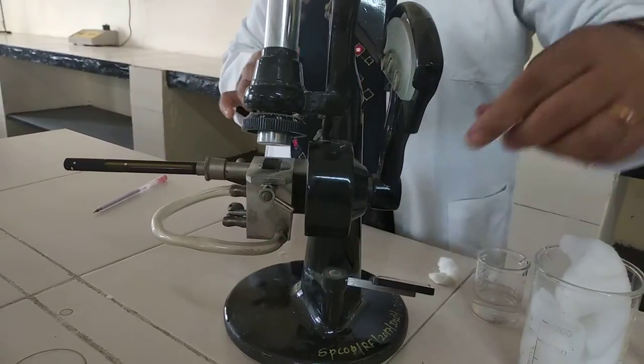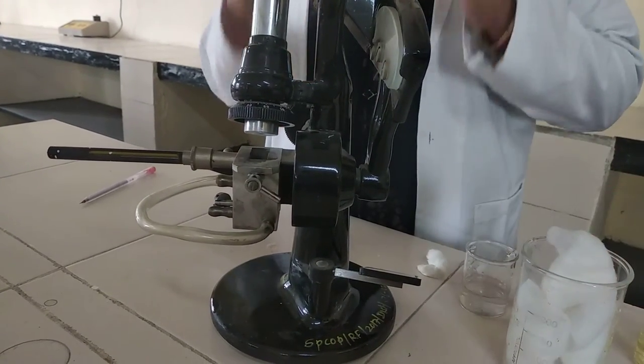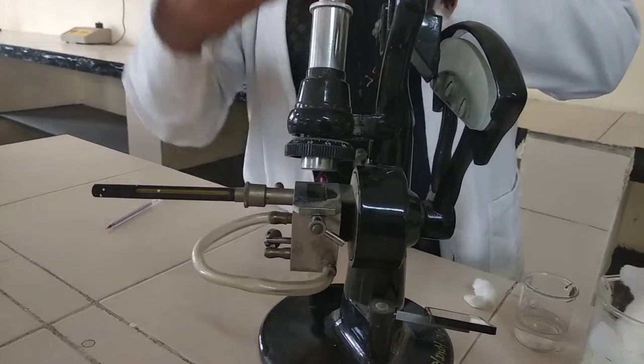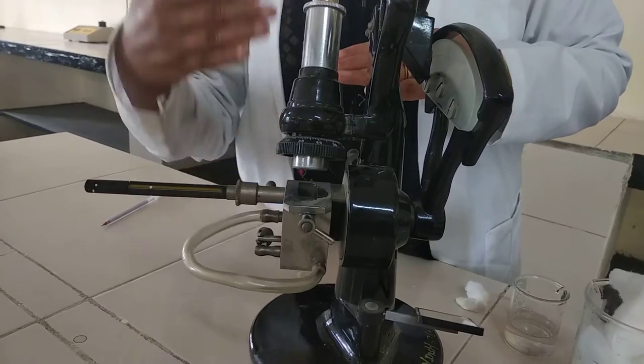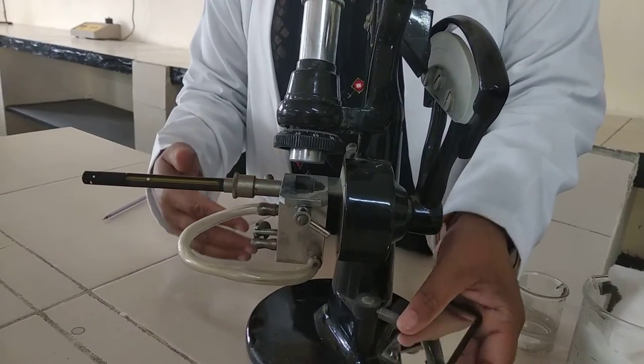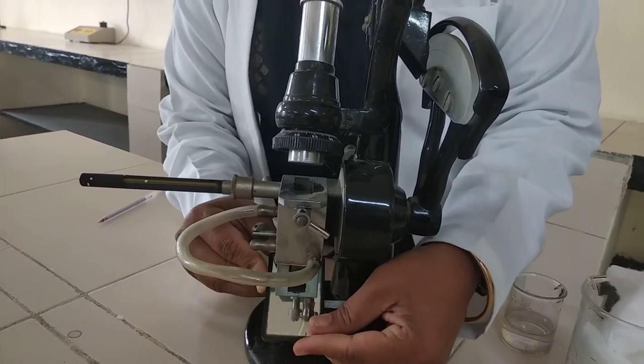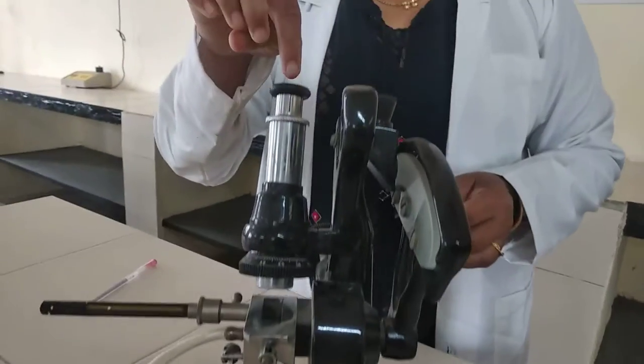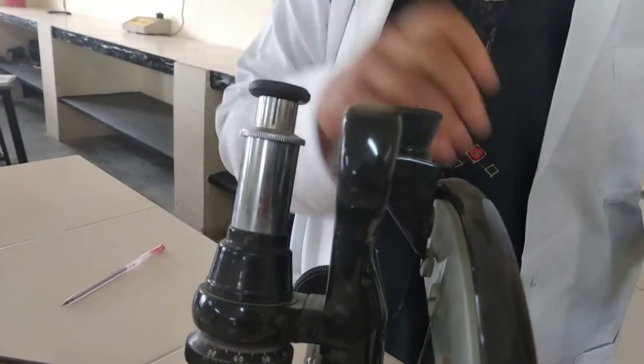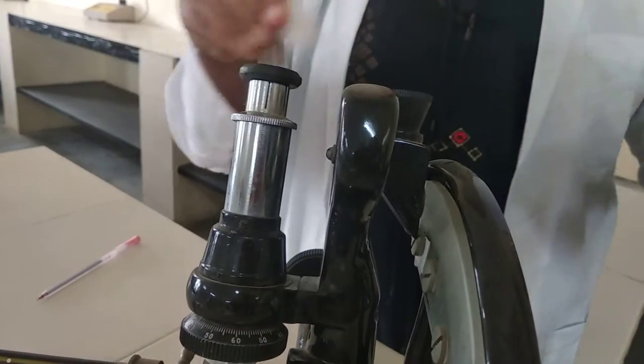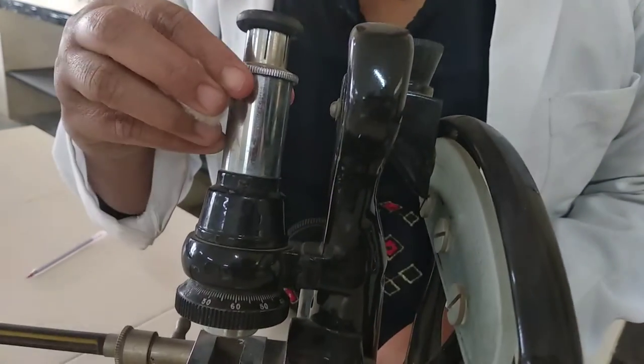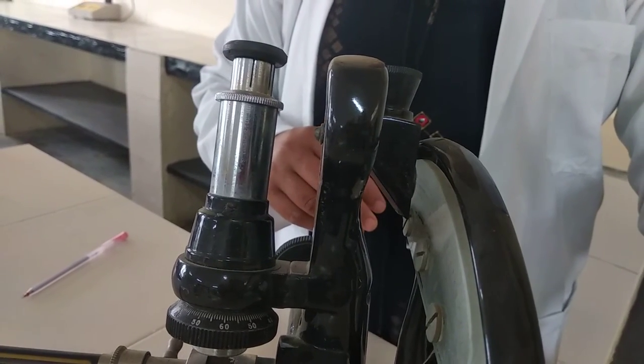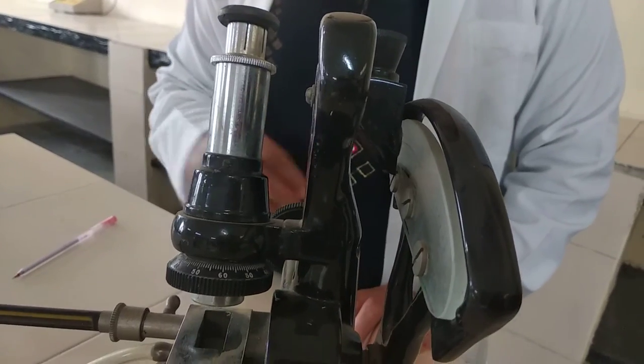When the prisms are closed, the liquid should be spread evenly to make it a thin film. After closing this prism, it will become a thin film. Next, the mirror turns to light. Here we have to adjust the mirror and look into this eyepiece. Afterwards, we have to look from this eyepiece. The mirror turns to light and look into this eyepiece.